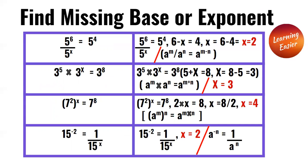Find missing base or exponents. Example: 5 to the power of 6 divided by 5 to the power of x is equal to 5 to the power of 4. Since we're doing exponent division, we would have to subtract the exponents. So 6 minus x is equal to 4. We can find x by subtracting 6 and 4, which equals 2. So x is equal to 2.